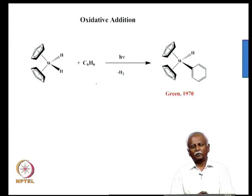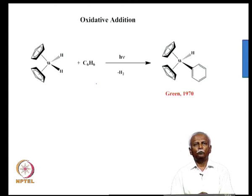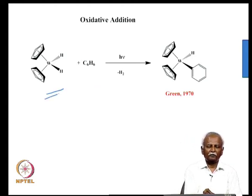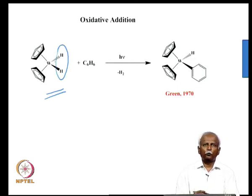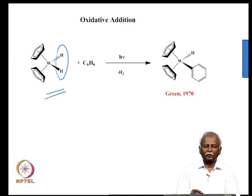Around about 4 or 5 years later, it was discovered by M. L. H. Green — another pioneer and important contributor in the area of C-H bond interactions. He found that if you took this tungsten dihydride — a tungstenocene which has got 2 hydrogens attached to it — and if you photolyze it in a benzene solution, then you would lose these 2 hydrogens as H₂, giving you a very reactive tungstenocene. This coordinatively unsaturated molecule reacts with the solvent and carries out oxidative addition of the C-H bond. This was discovered in 1970.